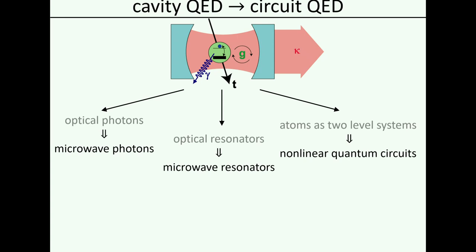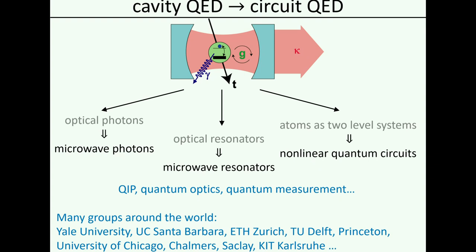People are working on quantum information processing, quantum simulation, quantum optics experiments, they investigate quantum measurements and so on and so forth. A cavity QED system and also a circuit QED system essentially consists of two building blocks: the cavity and the qubit. So let's first talk about our cavities — what we are using in Innsbruck are these waveguide microwave resonators.